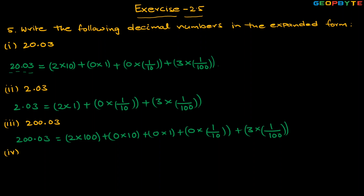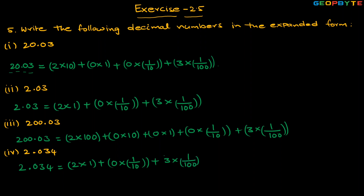The fourth one is 2.034. Two is at the ones place, zero is at the tenths place, three is at the hundredths place, and four is at the thousandths place. So we write: two × 1, plus zero × 1/10, plus three × 1/100, plus four × 1/1000. This is the expanded form of 2.034.